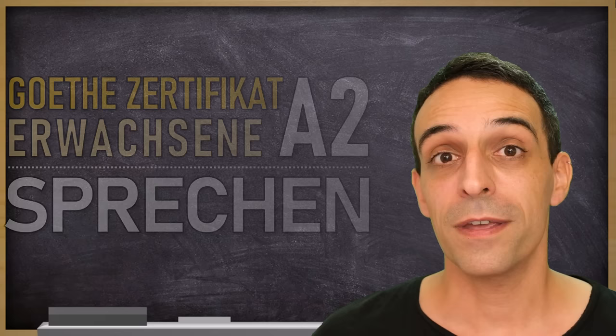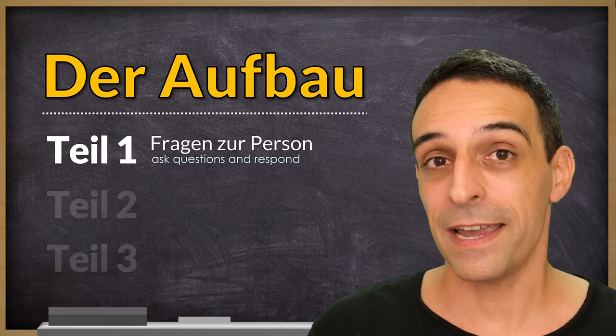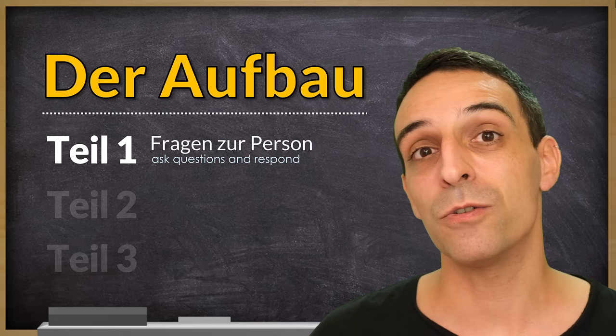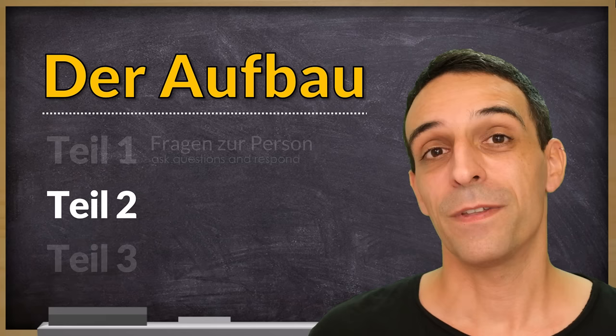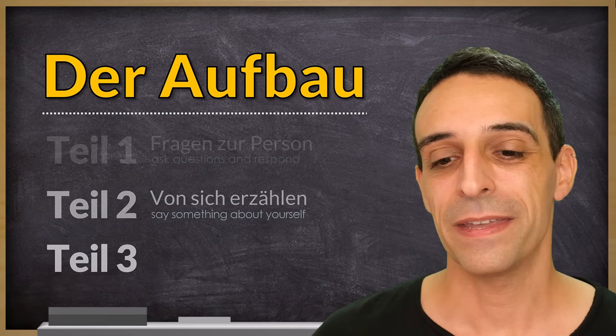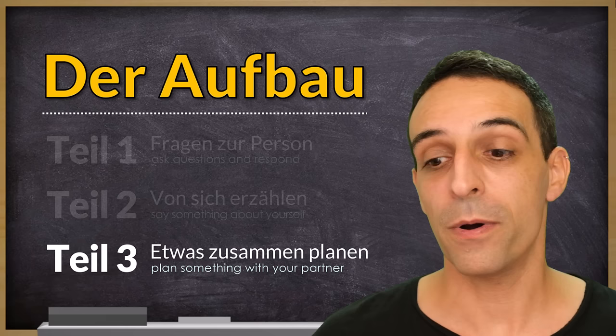There are three parts. Teil 1: Fragen zur Person. You have a partner in this test and you have to ask this partner some questions. Your partner will also ask you some questions that you need to answer. Teil 2: von sich erzählen. Here you need to say something about yourself — it's a monologue. Teil 3: etwas zusammen planen. In the third and last part you plan something together with your partner — that's the dialogue.